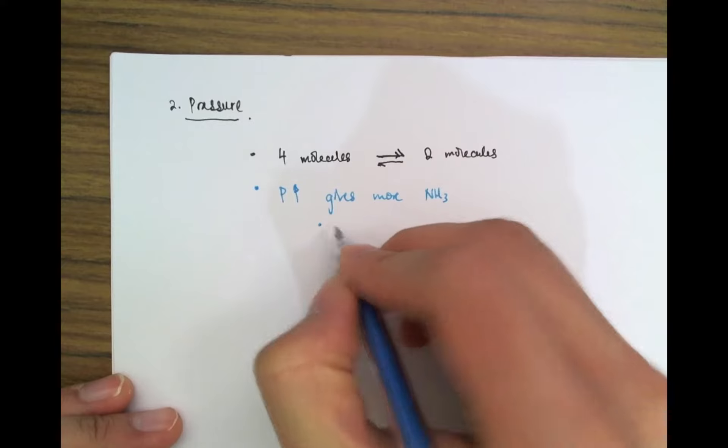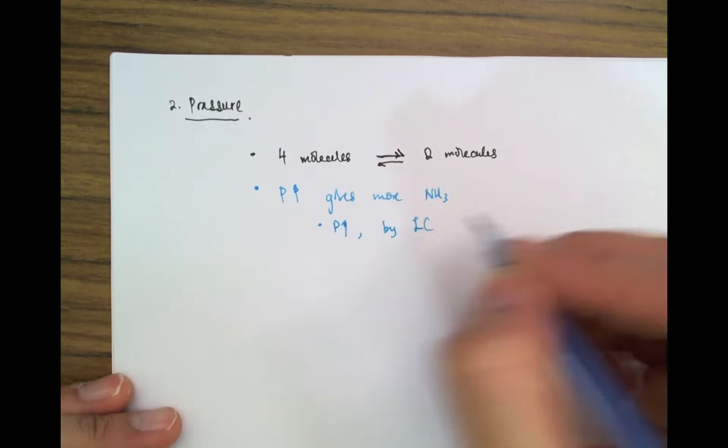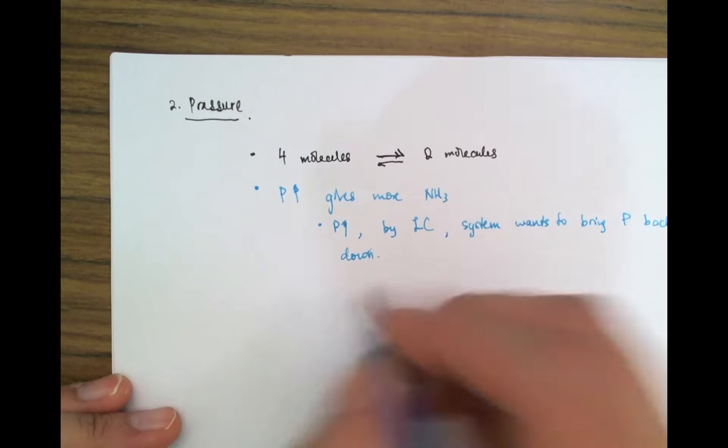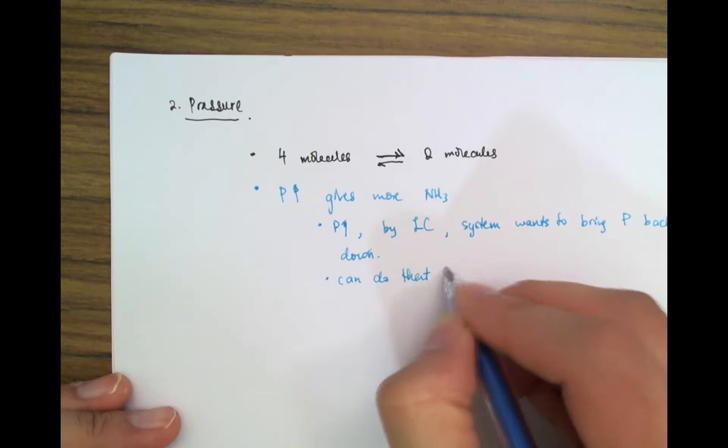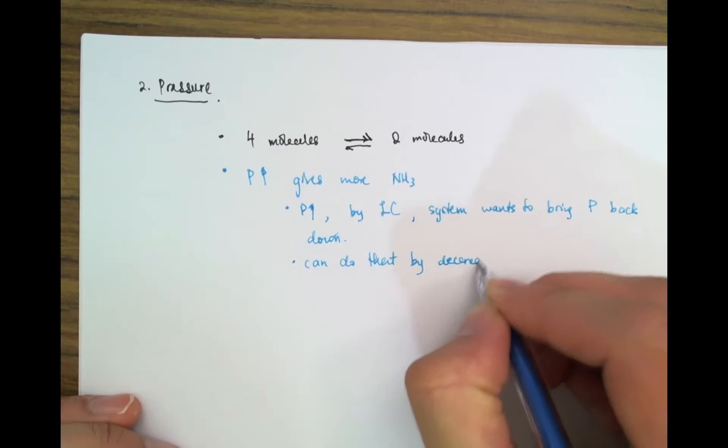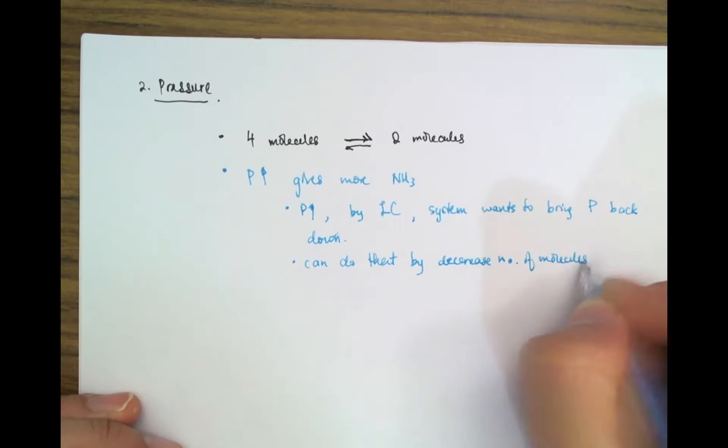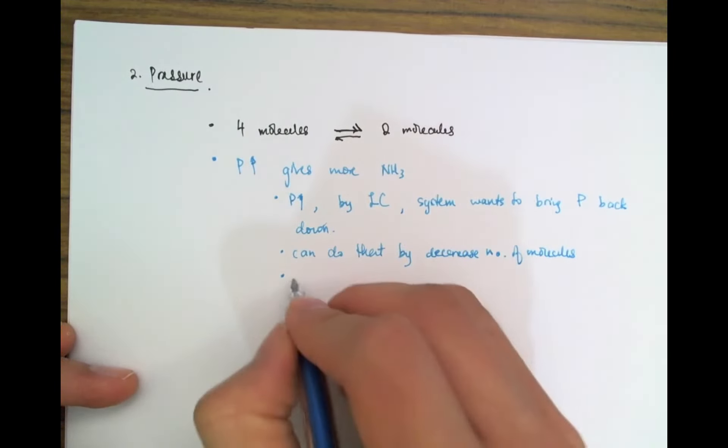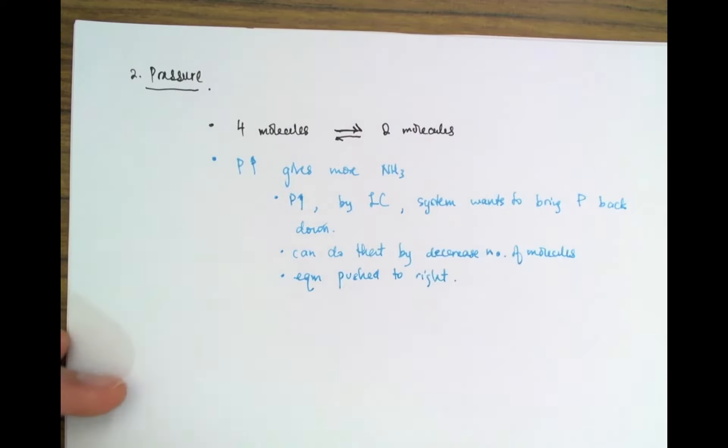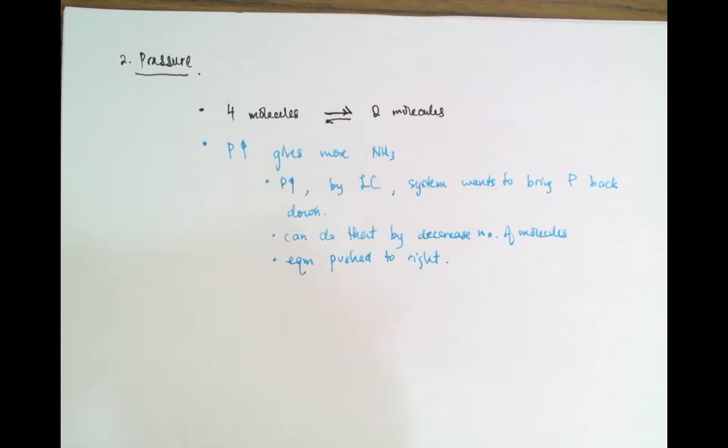So if you increase the pressure, then by Le Chatelier's principle, the system wants to bring it back down. And how can you do that? You can do that by decreasing the number of molecules, because decreasing the number of molecules will decrease the pressure. And which side has less molecules? The right side has less molecules, so the equilibrium is pushed to the right side. So the right side has less molecules, so it's pushed to the right. And that will somewhat relieve the increase of pressure that I imposed upon the system.